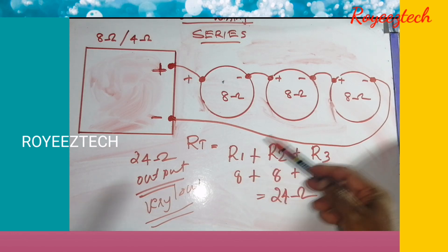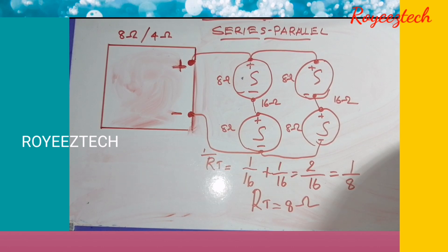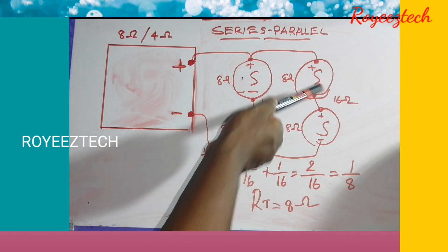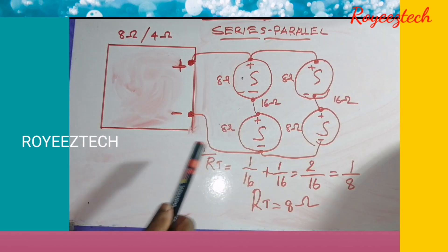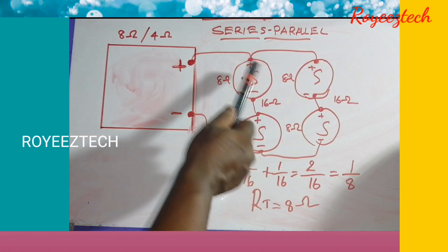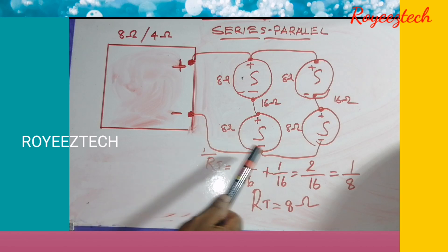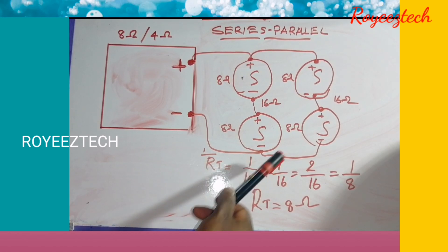We will calculate the series and parallel connection using 4-ohm speakers. The series and parallel combined connection gives a total resistance. We calculate: 1 by 16 plus 1 by 16 for the parallel portion.